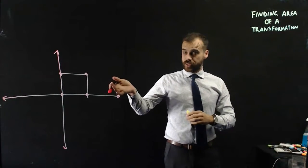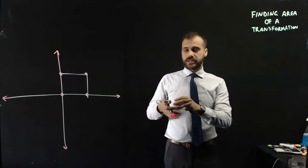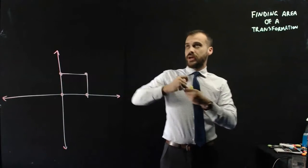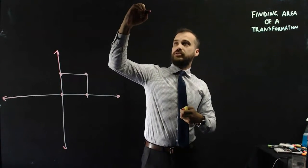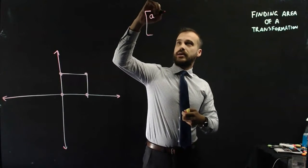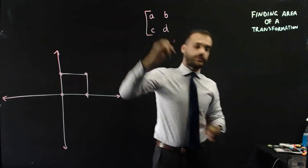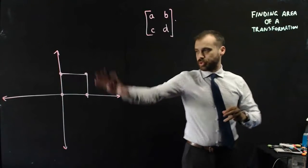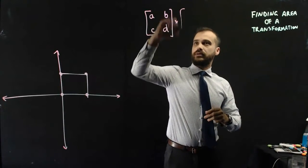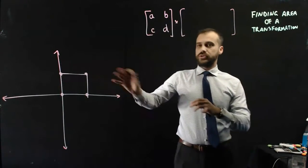To do it, let's look at the unit square first of all. So there's my unit square, and now I'm going to transform it by some matrix. But because I'm trying to prove how to do this, I'm just going to transform it by the matrix A, B, C, D.